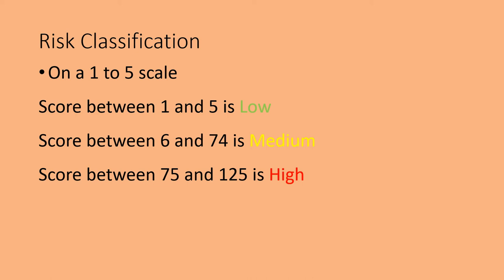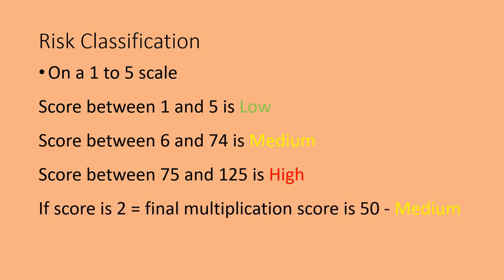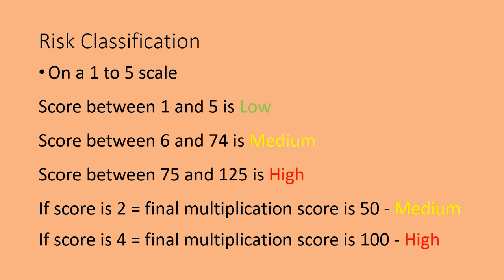If you see scenario 4, the risk for probability was considered as 3 and the final score was 75. But if the score were 2, the final multiplication score would be 50, considered medium risk. Whereas if the score is 4, the final multiplication score would be 100, which is high. So the qualitative evaluation done using FMEA and the quantitative evaluation done using FMECA yield exactly the same classification.